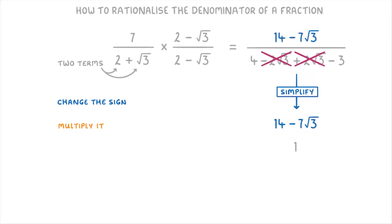Our numerator doesn't simplify down though, so we're left with 14 minus 7 root 3 all over 1, which is really just 14 minus 7 root 3.